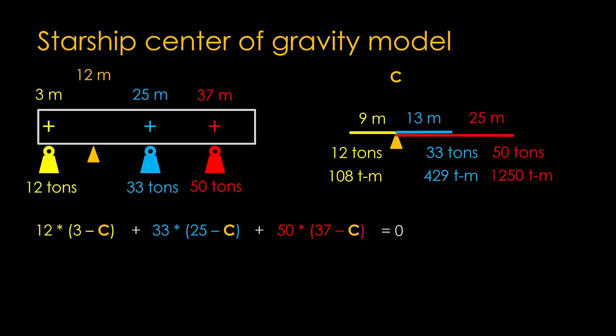I'll skip simplifying the equation to solve for C. I did it by hand, but Wolfram Alpha would be happy to help you out, and the answer is 28.5 meters. The center of gravity of Starship is 28.5 meters up from the bottom of the rocket.